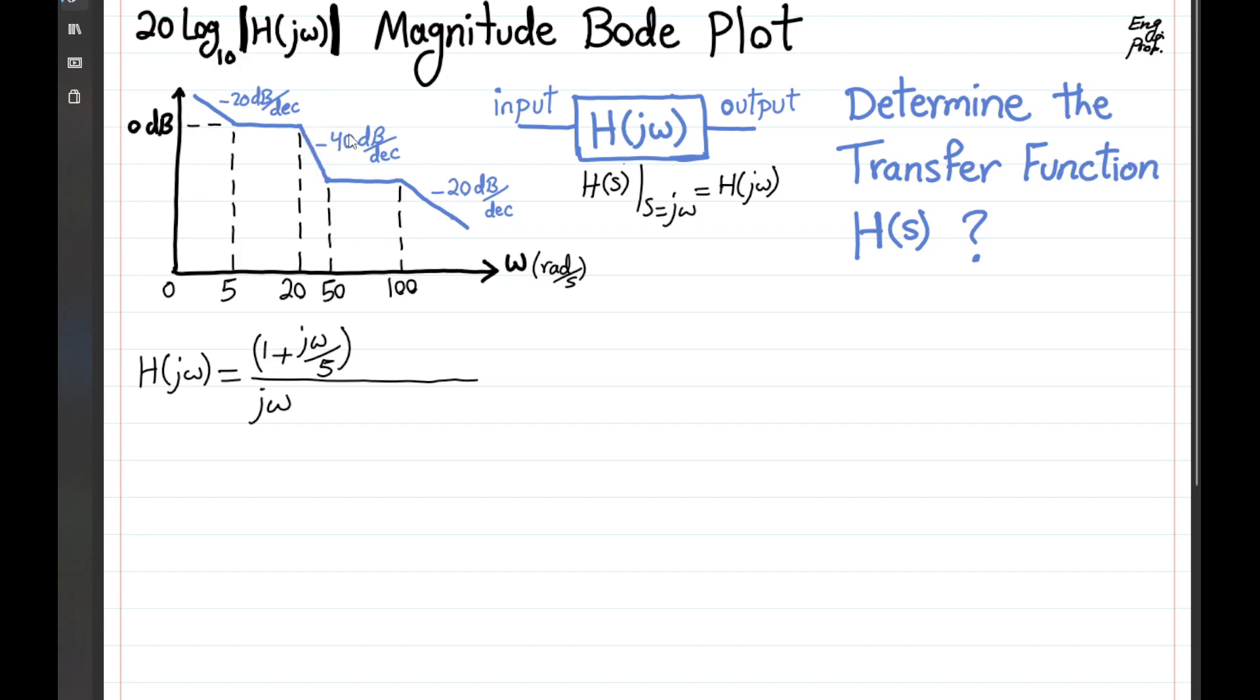because we are now dropping 40 dB per decade. So it's 1 plus j omega divided by 20, and then it should be power of 2, because the slope is 40 dB. So there should be 2 poles there. This continues up to 50.